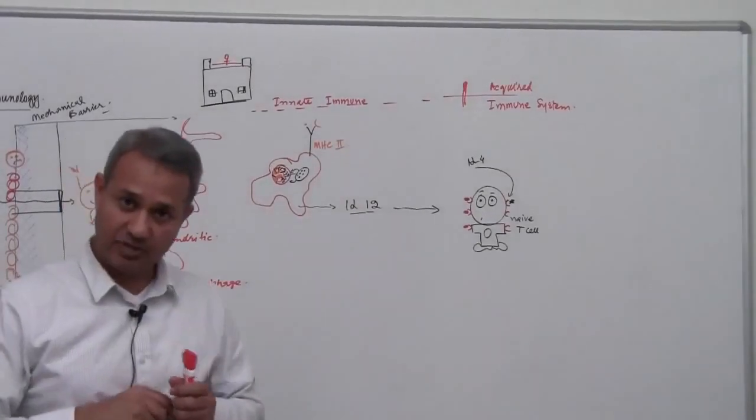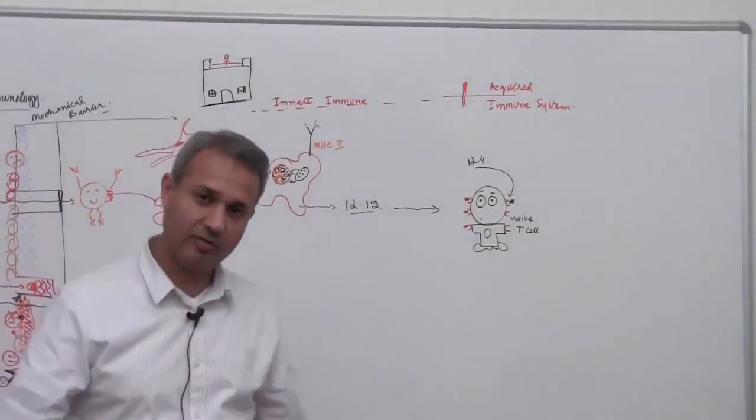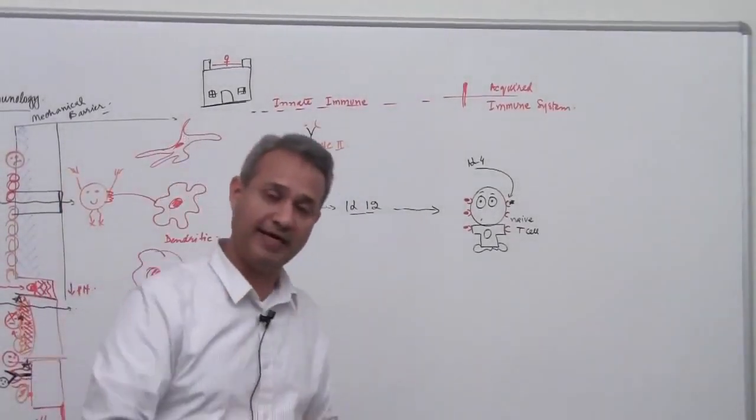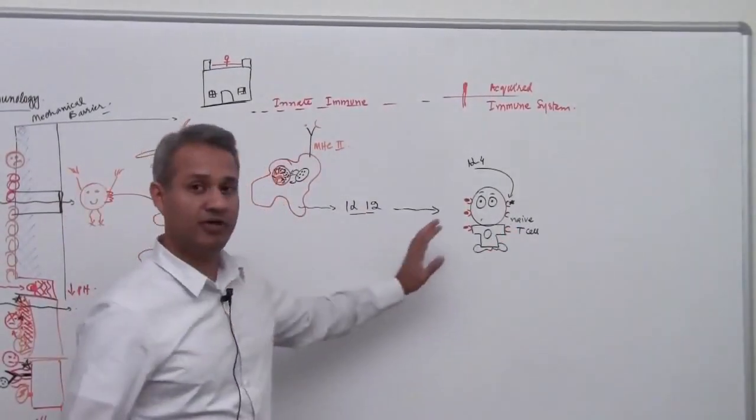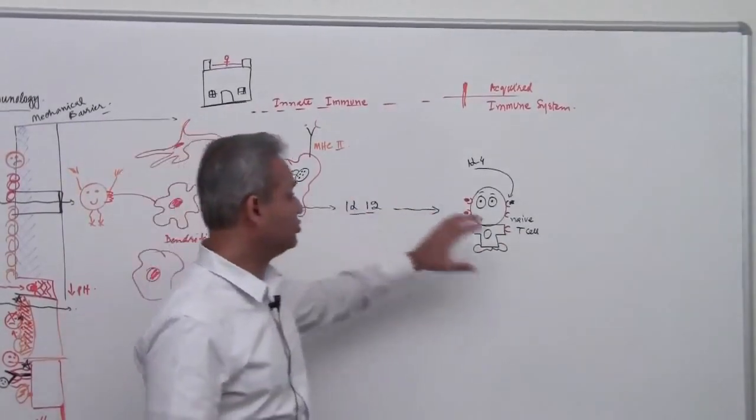So naive T helper cell, again we have not talked about these cells, we would talk more in detail, you would know everything about them. At this time, bigger picture, we have reached from innate to acquired.